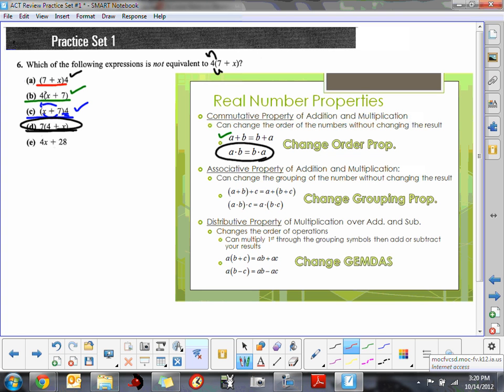And just to put a plug in for the distributive property, that's exactly what letter E is. If you take your 4 and distribute to your 7 + x, you have 28 + 4x. They use the distributive property, and again with the commutative property, they change the order to 4x + 28.